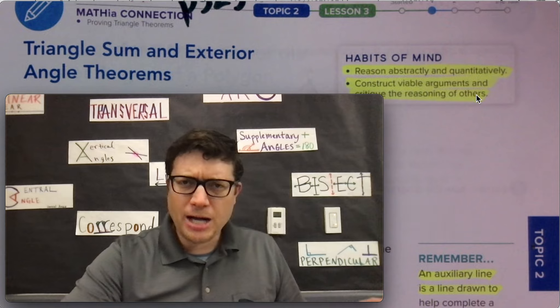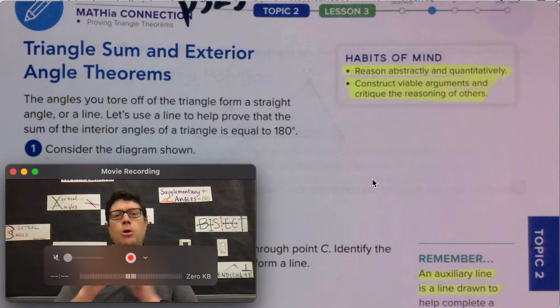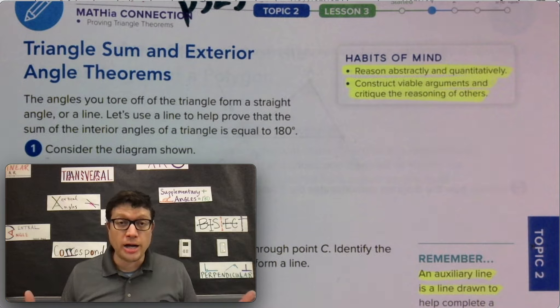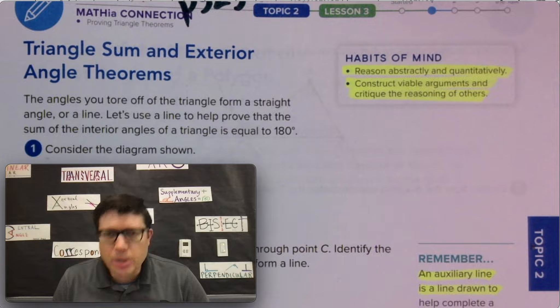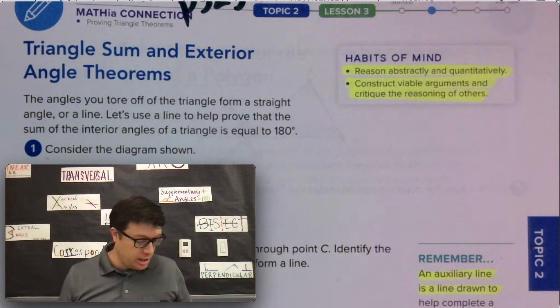If you look back on the previous video, the previous lesson, page 322, the angles you tore off of the triangle form a straight angle, a line. Let's use a line to help prove that the sum of the interior angles of a triangle is equal to 180 degrees. That's the triangle sum theorem.